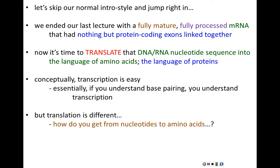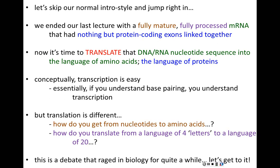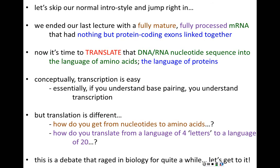But translation is different. Nucleotides are a different language than amino acids. We have four nucleotides — adenine, thymine or uracil, guanine, and cytosine — so we have to make a transition from a language of four letters to a language of 20, since there are 20 amino acids in all living things. Base pairing alone cannot get us from nucleic acids to amino acids. How to translate from four nucleotides to 20 amino acids was a debate that raged in biology for a long time, with no theoretical consensus for how it could be possible.